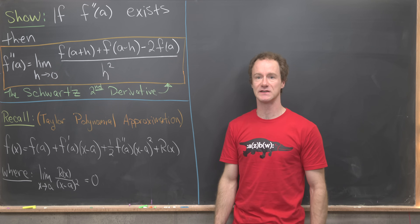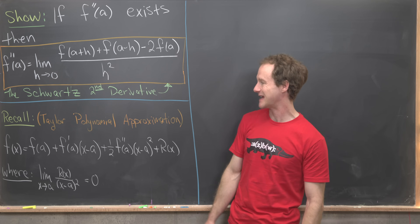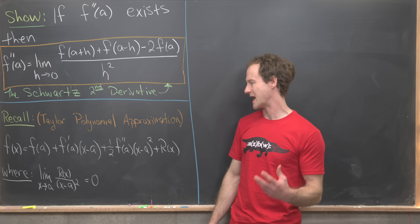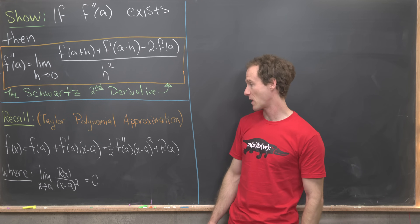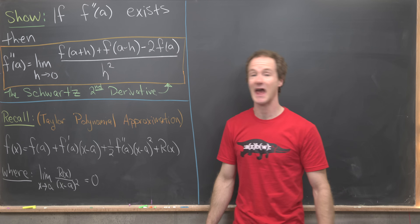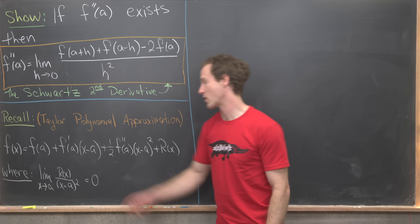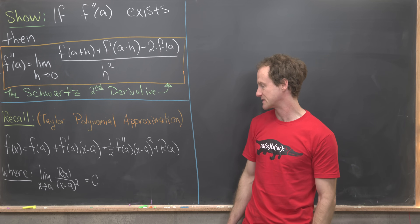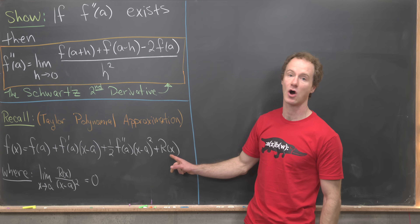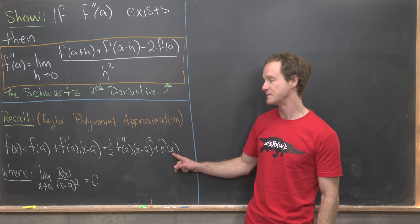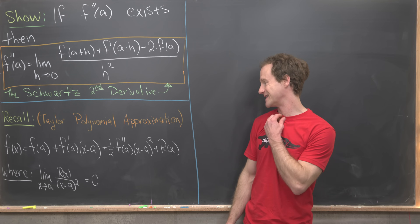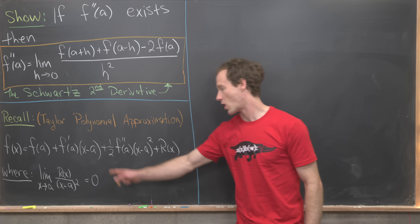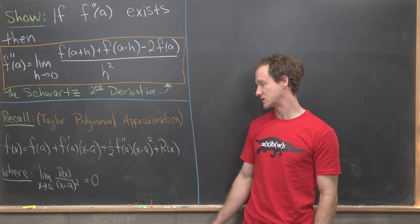In order to prove this limit realization, we're going to use a Taylor approximation for the function f — specifically a second degree Taylor polynomial. That means we can write f of x as f of a plus f prime of a times x minus a plus one half f double prime of a times x minus a squared plus r of x, where r of x is a remainder function. This remainder function satisfies the property that the limit as x goes to a of r of x over x minus a squared equals zero.